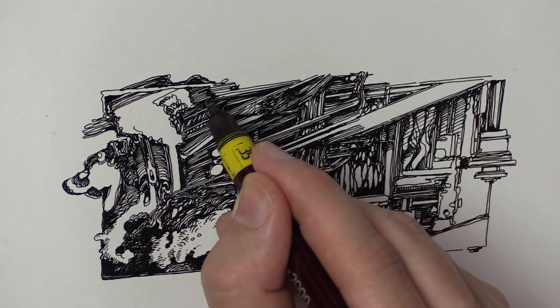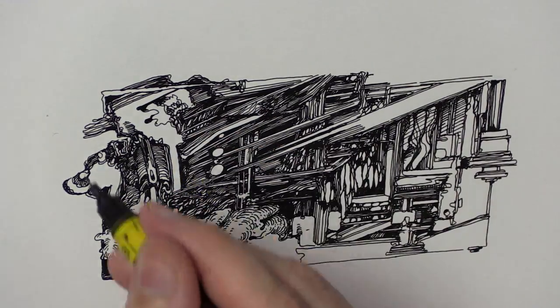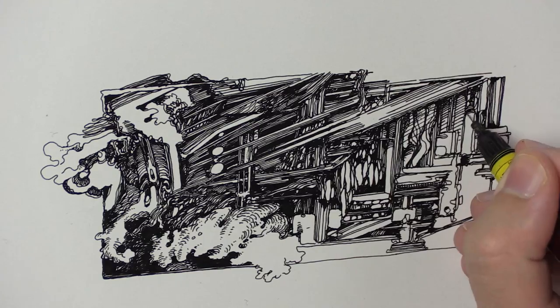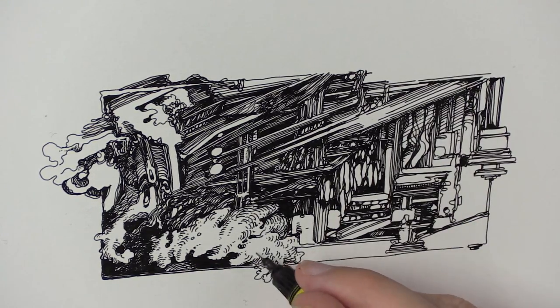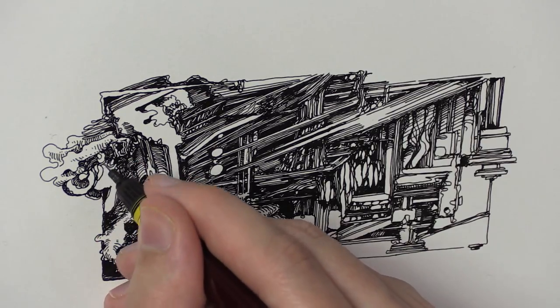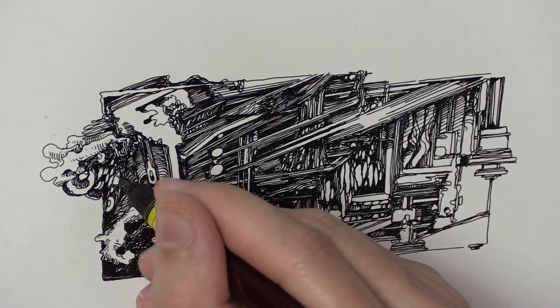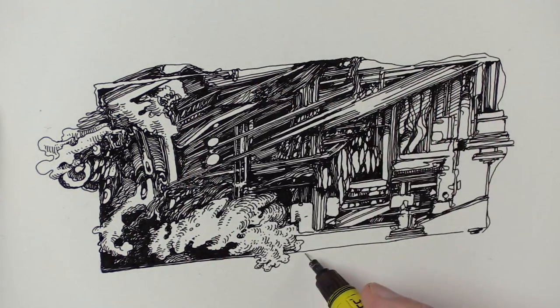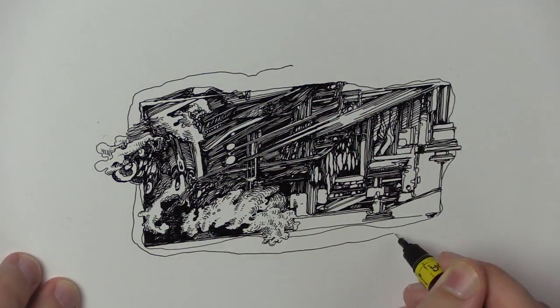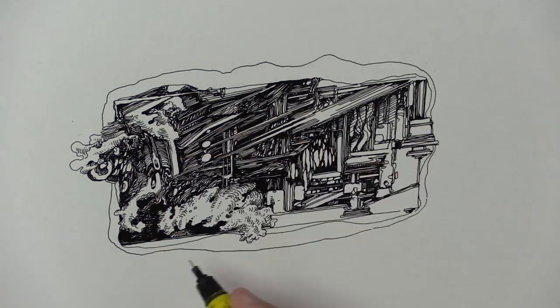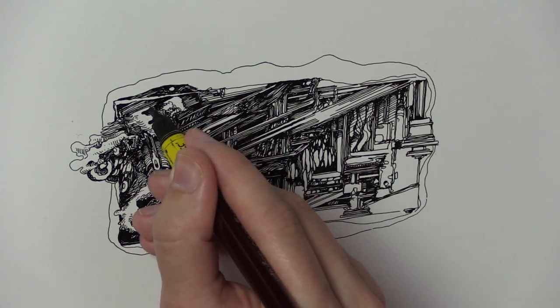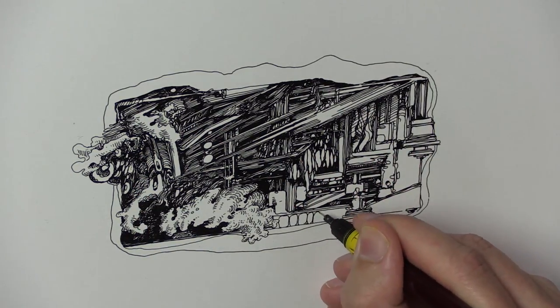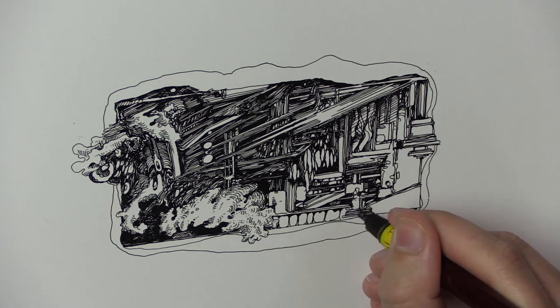What's that called? Pareidolia. I'm googling it now. Pareidolia—you can look it up, P-A-R-E-I-D-O-L-I-A. The tendency for incorrect perception of a stimulus as an object, pattern, or meaning known to the observer, such as seeing shapes in clouds, seeing faces in inanimate objects or abstract patterns, or hearing hidden messages in music.